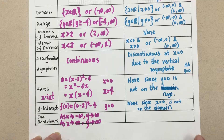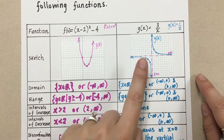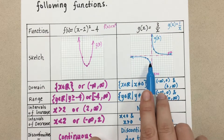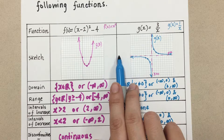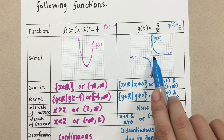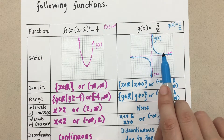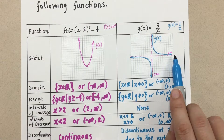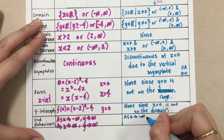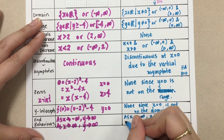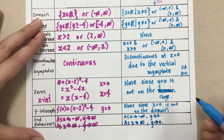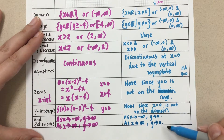Finally, for end behavior: as x approaches negative infinity, the y values get very very close to zero but never touch it — they approach zero. As x approaches positive infinity, the y values also approach zero. So as x → -∞, y → 0, and as x → +∞, y → 0. The format we write this in is very important to communicate our work properly.